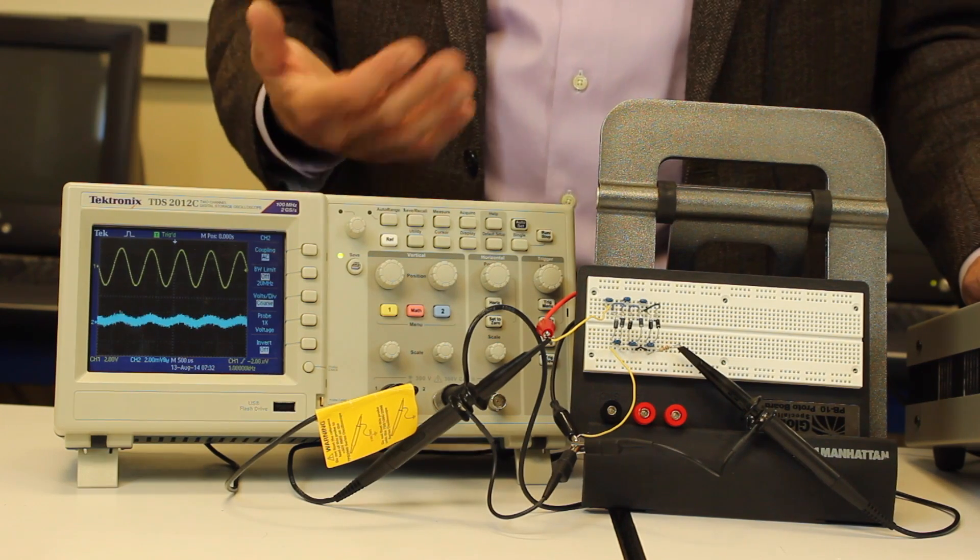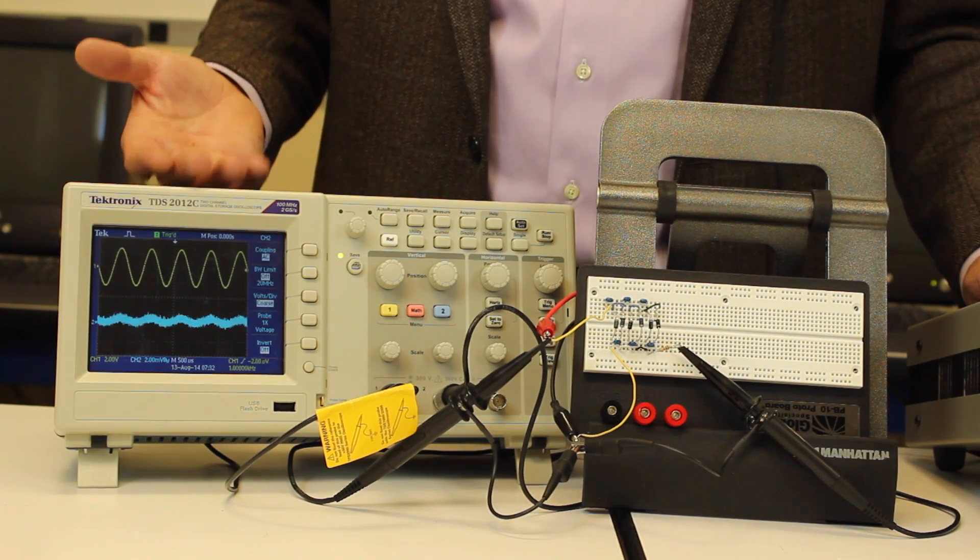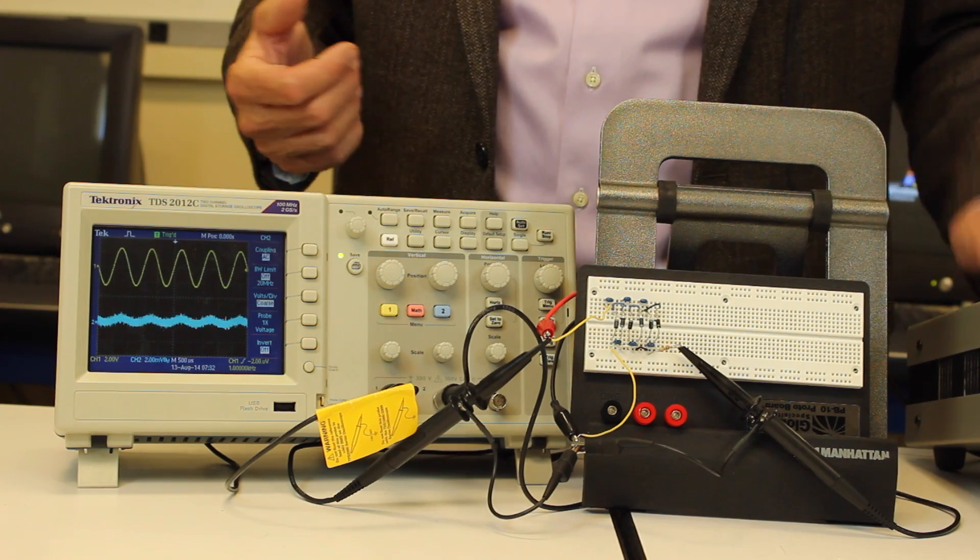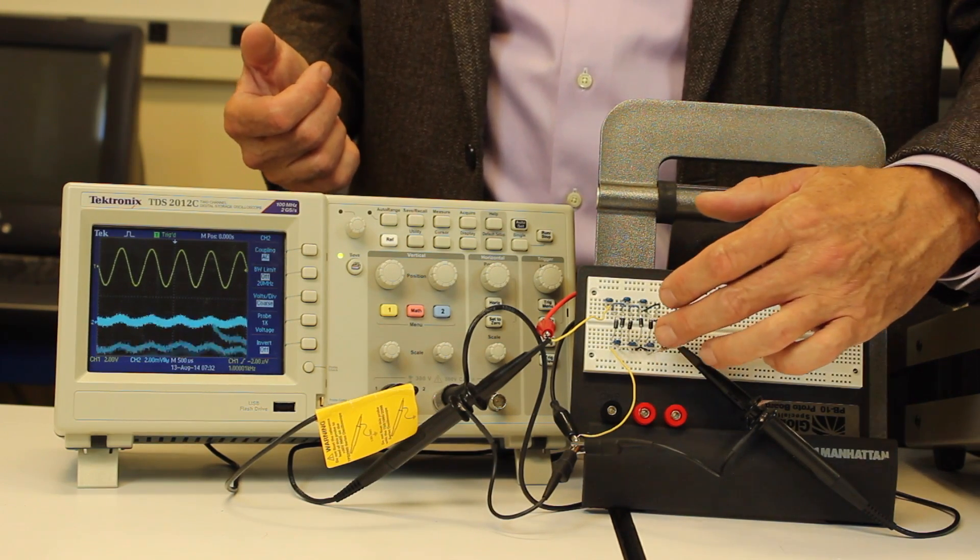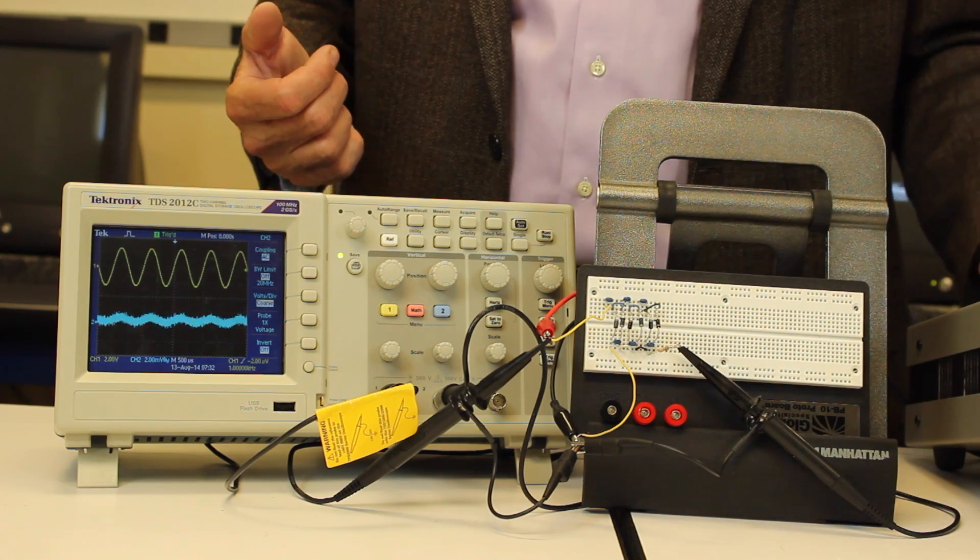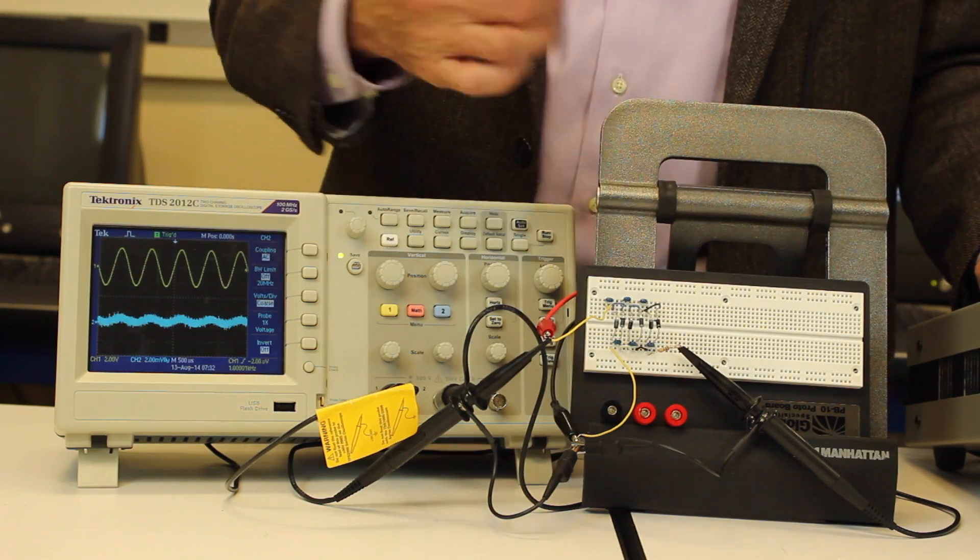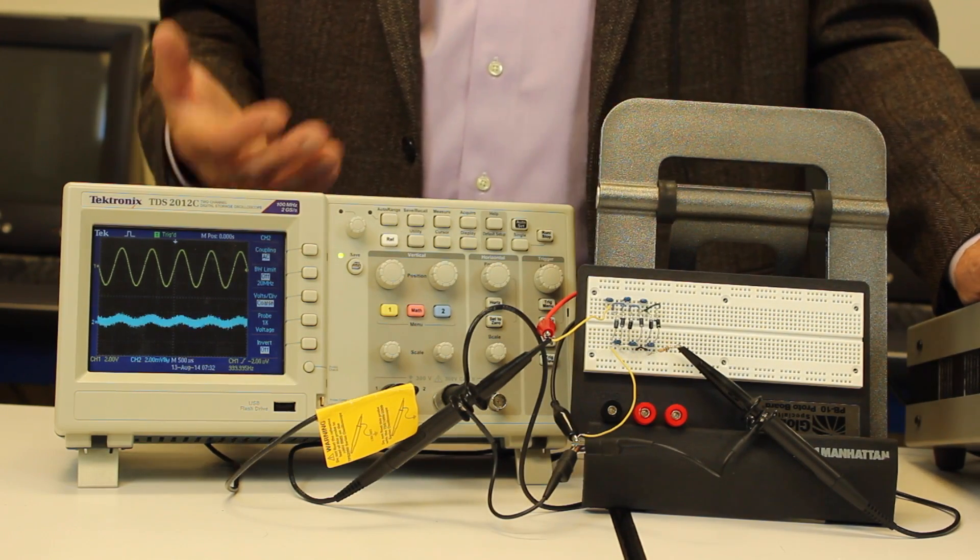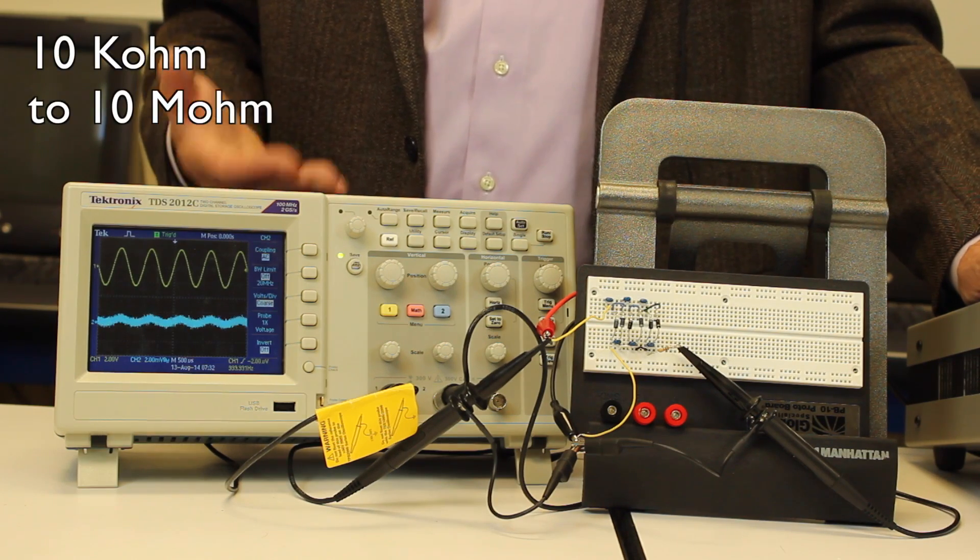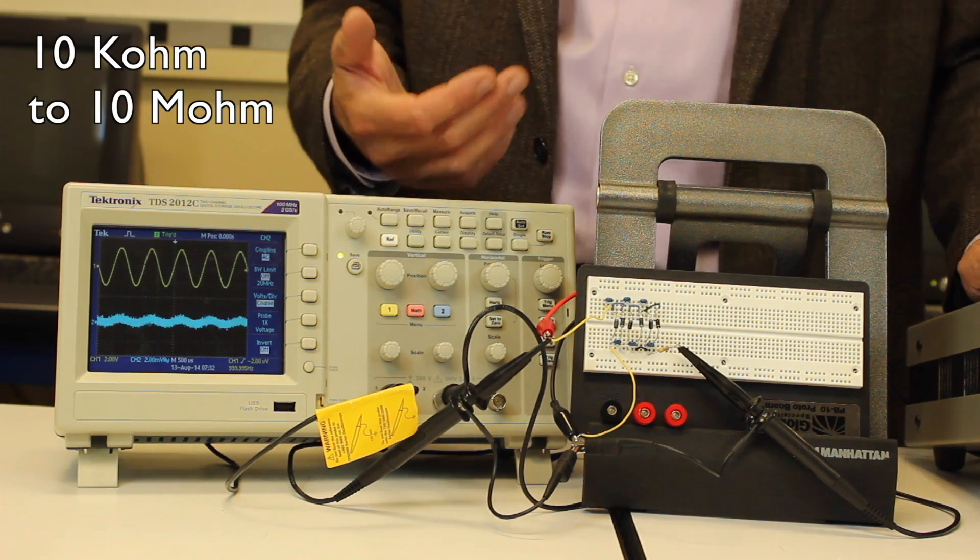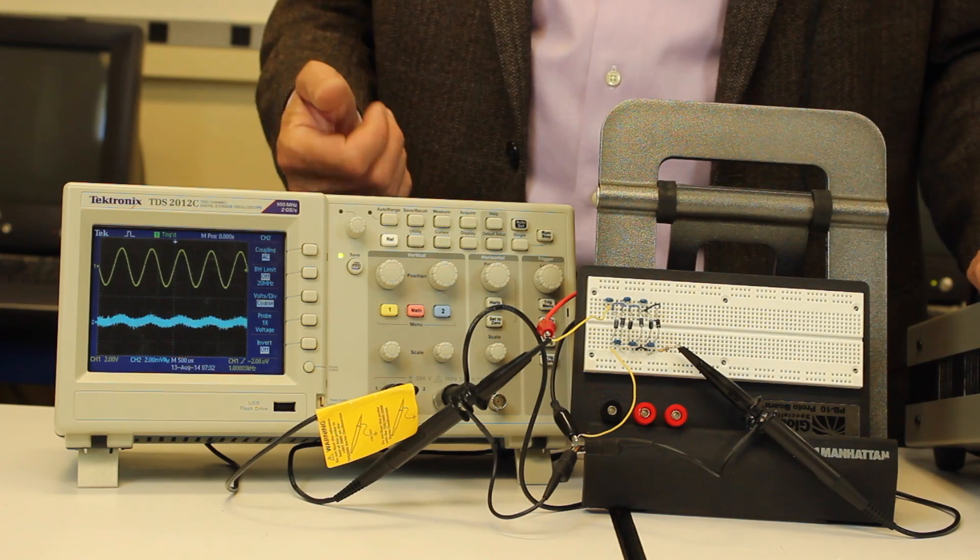So we're going to measure the DC level and the ripple as a function of various resistors that we choose here. So we'll make plots of that. So I've got one particular resistor here. There's a number of them that vary from tens of kiloohms up to megaohms that you'll be testing in the lab with your particular circuit here.